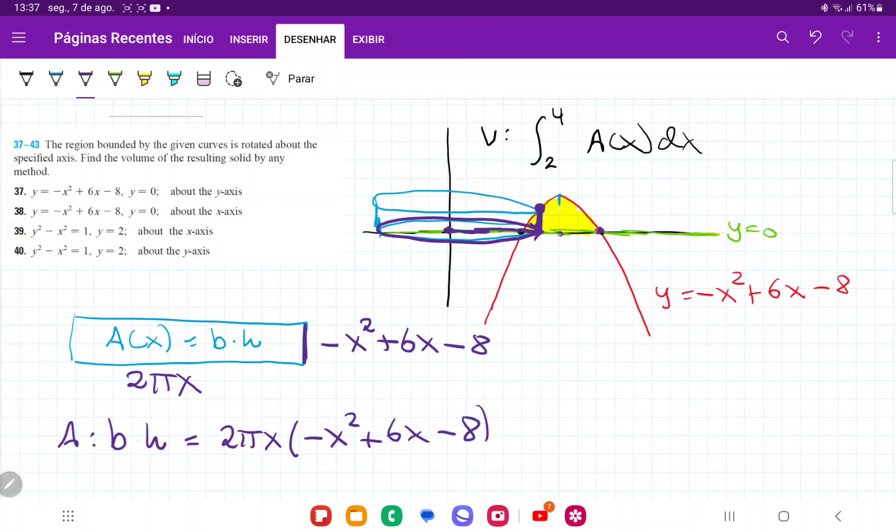And because we're integrating this expression, this is our expression for the area, which is this guy right here. Since we're going to integrate it, we have to be able to express it as a simple polynomial and not as a product because that's going to make our integral easy. And so I'm just going to distribute that x. So this will give me 2 pi times minus x cubed plus 6x squared minus 8x.